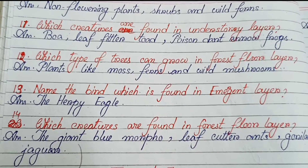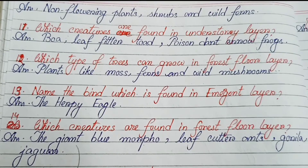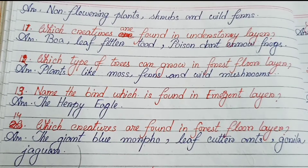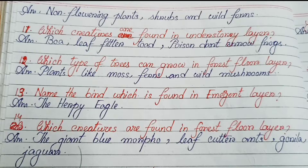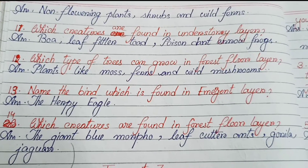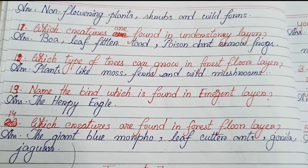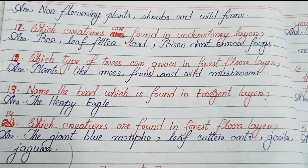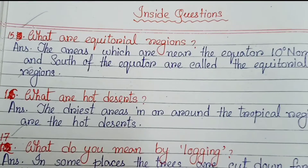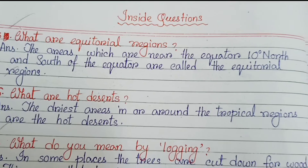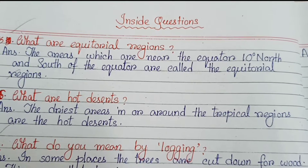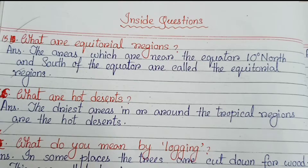Which type of plants can grow in the forest floor layer? Plants like moss, ferns, and wild mushrooms. Number 13: Name the bird found in the emergent layer — the harpy eagle. Number 14: Which creatures are found in the forest floor layer? The giant blue morpho butterfly, leaf-cutter ants, gorilla, and jaguar.